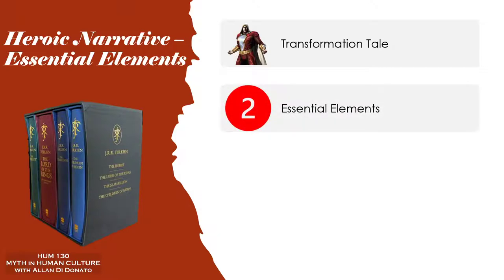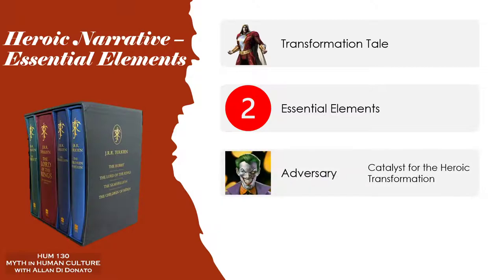There are two essential elements I think every hero story must have. The first is an adversary — a villain, a bad guy, a monster, or even a situation the hero must deal with that is a threat, forcing the hero to manifest the necessary characteristics. The adversary is essential because it is the catalyst for heroic transformation. The trickster very often comes across as an adversary — a prototype to both the hero and the villain. Without an adversary or a situation causing change, you're not really dealing with a hero story.